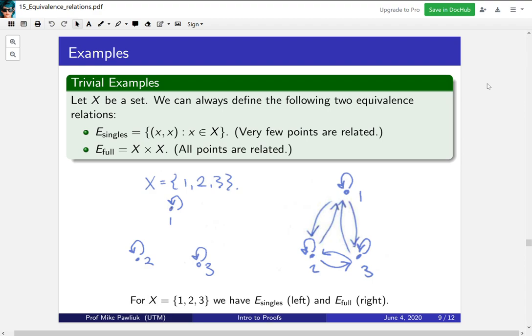We start with a very trivial example. Let X be any set. We can always define these two equivalence relations. What's called E-singles, that's not its official name it's just what I call it, E-singles which is the collection of all (x, x), and E-full which is all pairs.